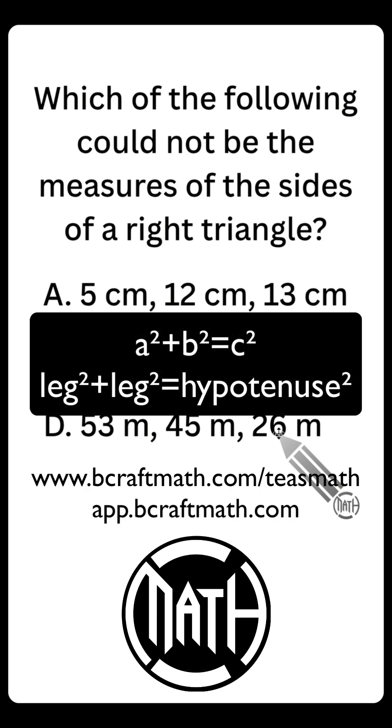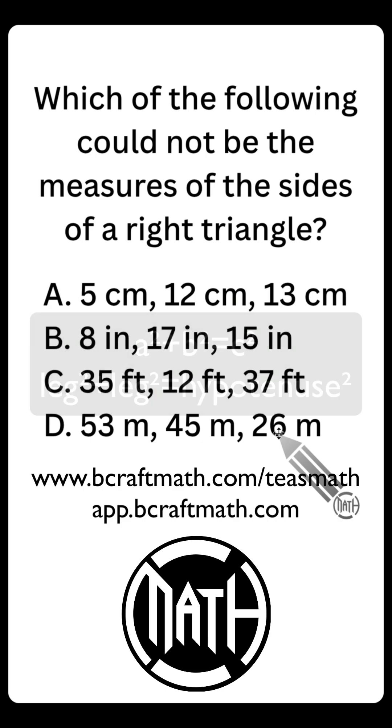A and B are called your legs, those are your two shorter sides. C is the hypotenuse, and C, the hypotenuse, that's always the longest side. Keep that in mind, I'm going to try to get you right here in a second.